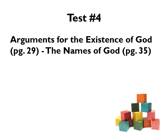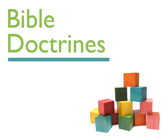Test number four will be in the next class on campus. It will cover the topics from the arguments for the existence of God on page 29 — basically the beginning of theology proper — through the names of God on page 35. Test number four will not include the section on the nature of God covered in this lecture; that will be included on test five. That brings us to the end of this lecture. If you have any questions or need anything, please do not hesitate to contact me.